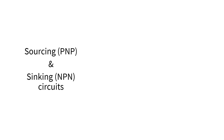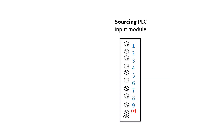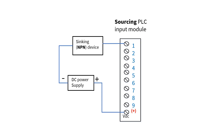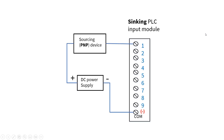A sourcing and sinking circuit consists of the following parts: sourcing part, sinking part, and a power supply. Here I want to show you in general how the sinking and sourcing circuit diagrams look. Here I have a sourcing PLC input module connected to a sinking NPN device, then to a power supply, which is connected back to the sourcing PLC input module. For the other configuration, I have a sinking PLC input module connected to a sourcing PNP device that is connected to the positive side of the power supply, which is also connected back to the sinking PLC input module.